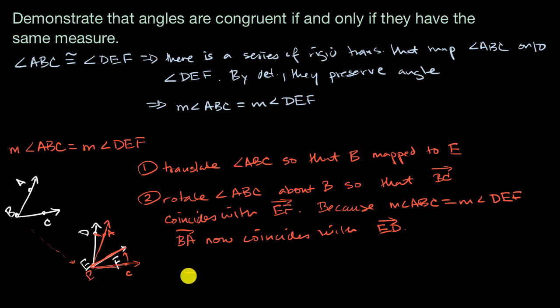And because of that, the angles now completely coincide, and so we know that angle ABC is congruent to angle DEF. And we're now done. We've proven both sides of this statement. If they're congruent, they have the same measure. If they have the same measure, then they are congruent.